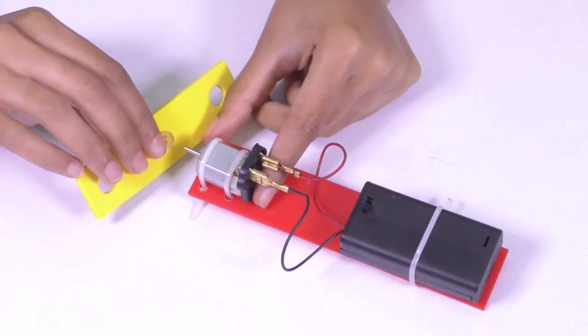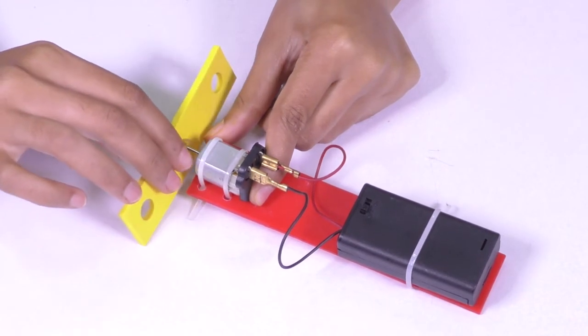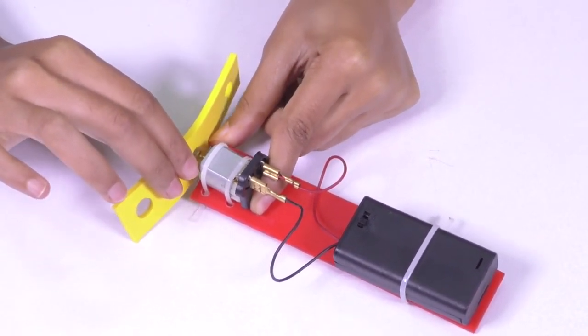Now, take test tube hanger and attach this to the motor by inserting the motor shaft into the pulley in the middle of the hanger.